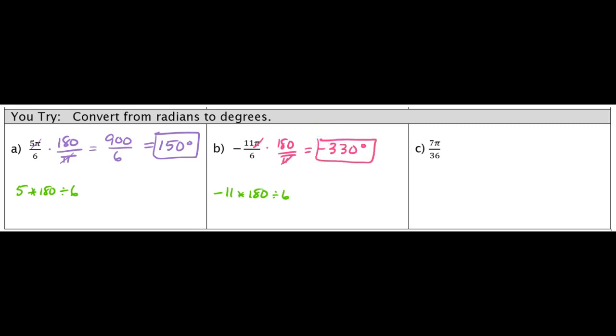And then last but not least, 7 pi over 36. We do the exact same thing. Multiply by 180 over pi. Pi's cancel. In your calculator, you can do 7 times 180 divided by 36, and your final answer comes out to 35 degrees.